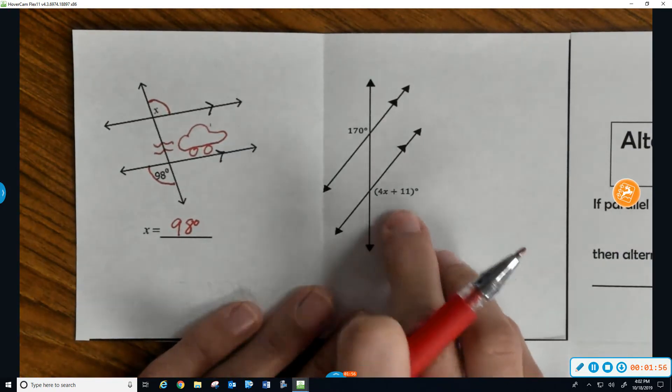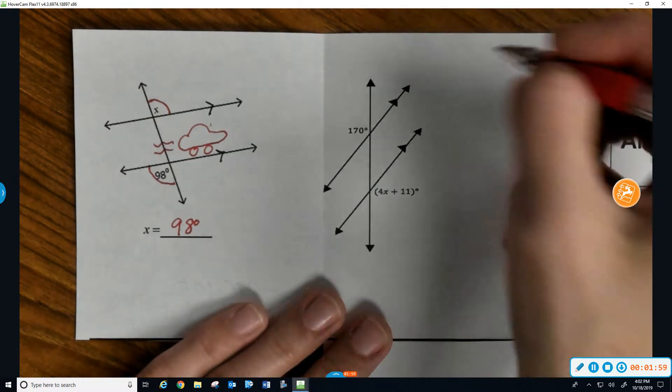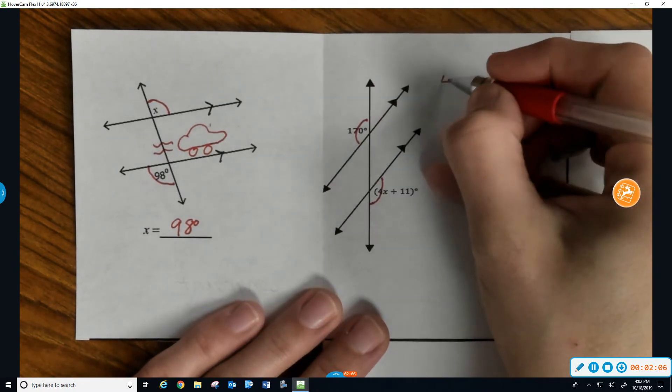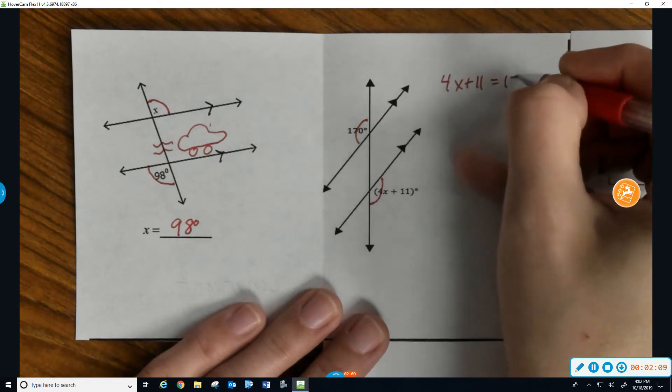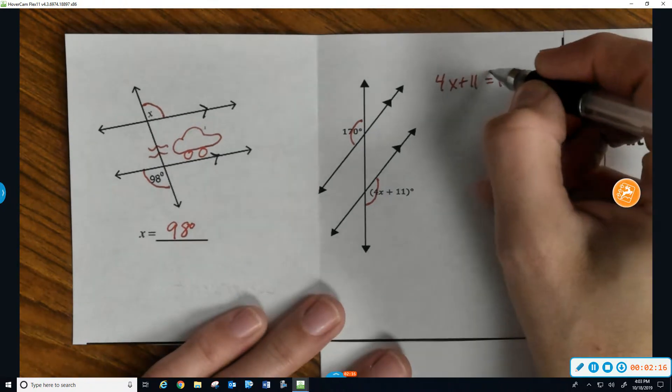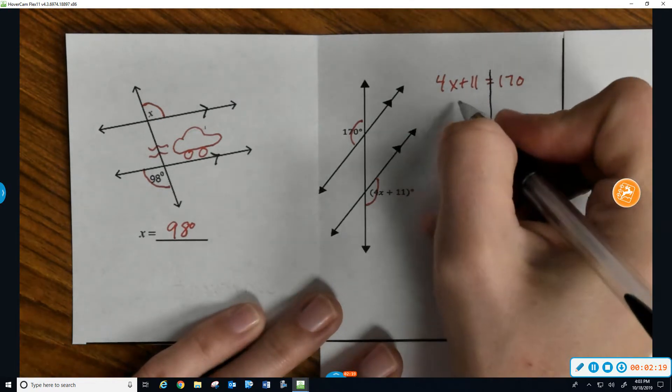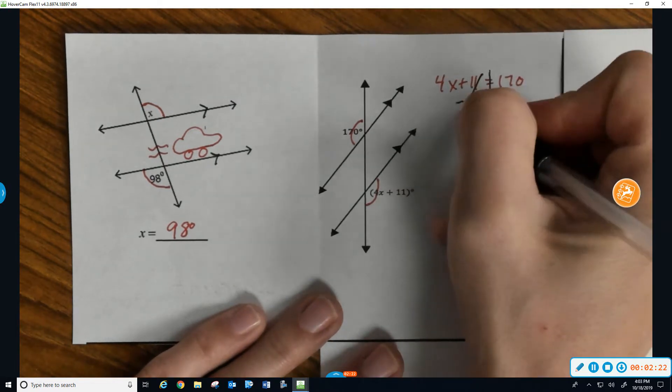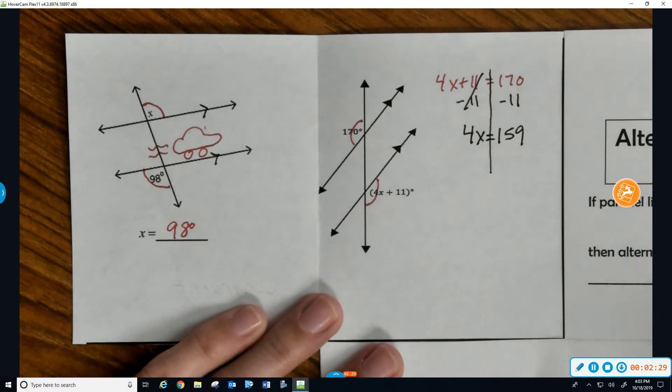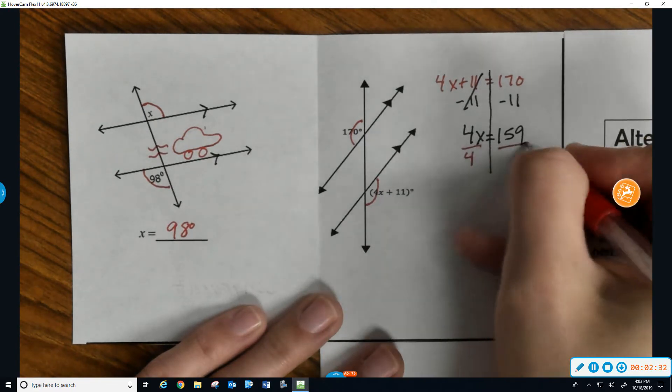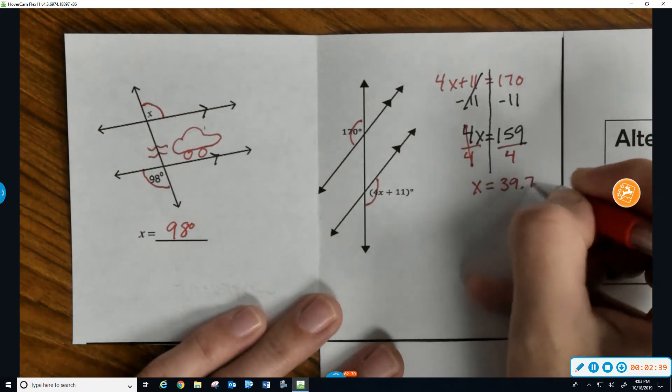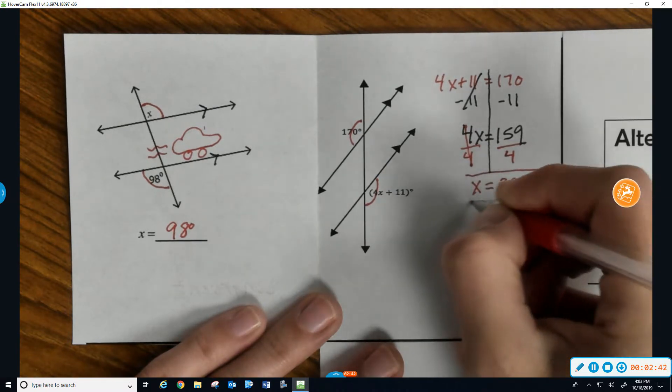Once we start bringing in algebraic expressions like 4X plus 11, we need to remember how to solve whenever these are congruent. We set them equal to each other. So we would have 4X plus 11 is equal to 170. This is where you should pause it, solve for X on your own, then press resume and see if you got the correct answer. First step, subtract 11 from both sides. So those cancel. We're left with 4X equals 159. Then we need to divide each side by what's attached to X there, the 4. And we do come out with a decimal. X is going to equal 39 and 75 hundredths. And those are solving for X, setting them equal to each other.